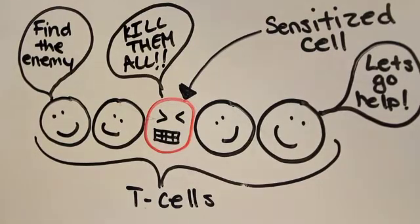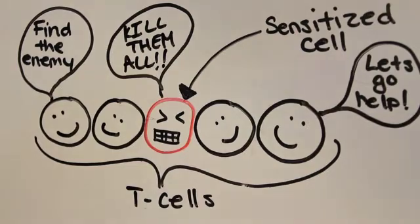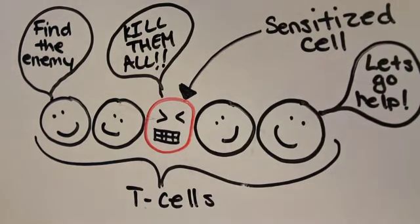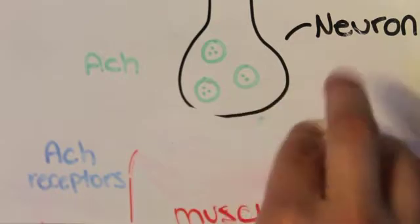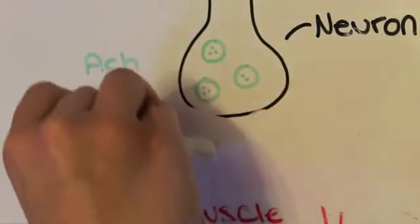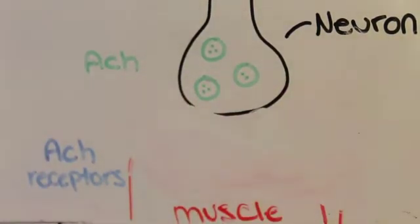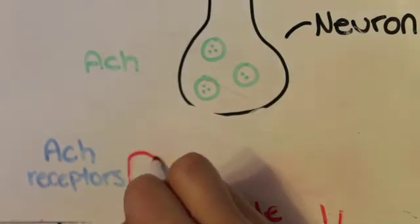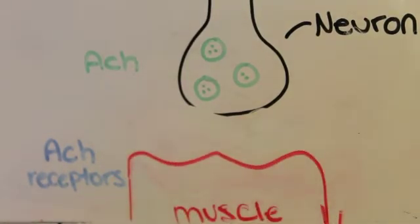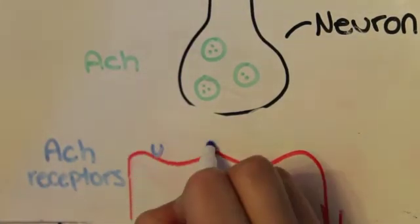While exactly what triggers MG is unclear, as mentioned before, the hypothesis is that the helper T cells play a prominent role due to being incorrectly sensitized. The created autoantibodies block some of the acetylcholine receptors and destroy others by causing the deep folds of the muscle fiber end plate to retract, thus widening the synaptic space.